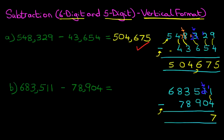On to the tens, we've got 0 minus 0. That's a nice easy one — it's 0. How about the hundreds? We've got 5 minus 9. Because 5 is smaller than 9, we're going to take 1 from the column on the left. So let's cross out the 3. 3 minus 1 is 2, and the 1 we have taken from here we're going to add to the 5. The hundreds column now reads 15 minus 9. 15 minus 9 is 6.